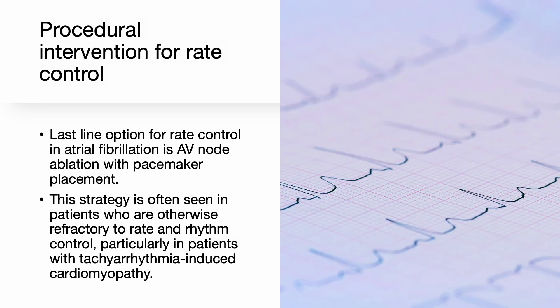The last line option for rate control in atrial fibrillation is AV node ablation with pacemaker placement. This strategy is often seen in patients who are otherwise refractory to rate and rhythm control, particularly in patients with tachyarrhythmia-induced cardiomyopathy.